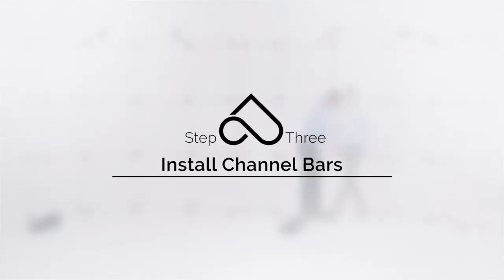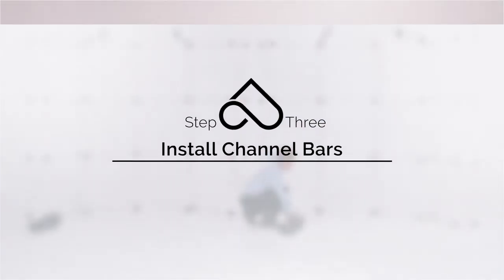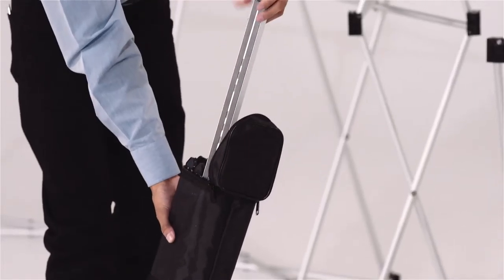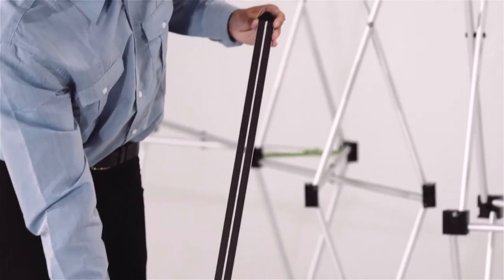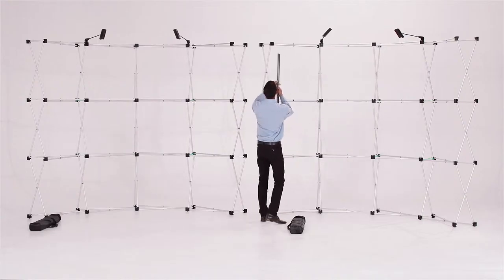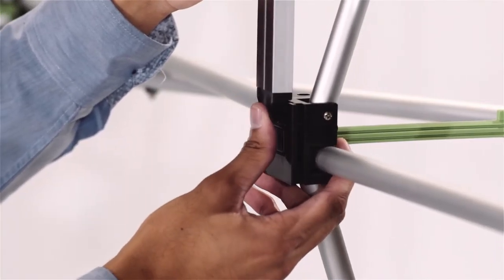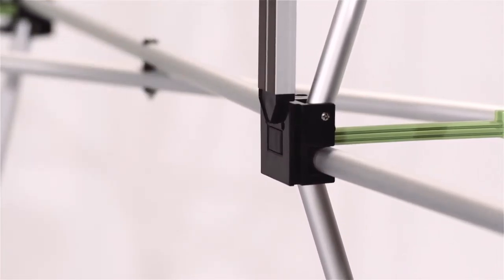Next, you'll install the channel bars. Find the channel bar bag for one of the frames. Take one and slide the top green end into the hub like so. Also, the bottom black tip of the bar will pop into the hub as shown here.